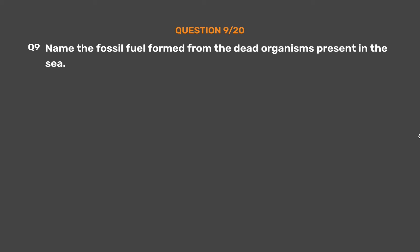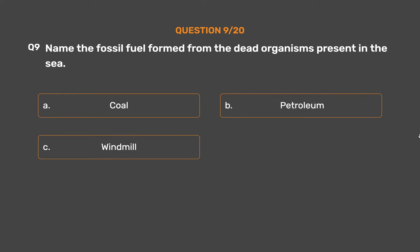Question number 9: Name the fossil fuel formed from the dead organisms present in the sea. Option A: Coal. Option B: Petroleum. Option C: Windmill. Option D: None of these.